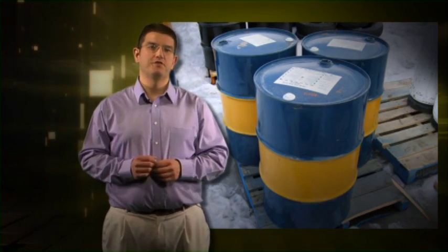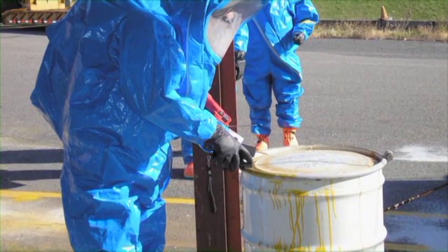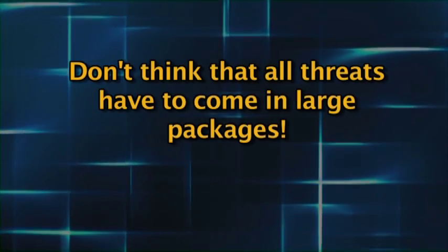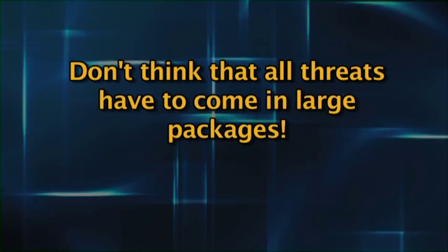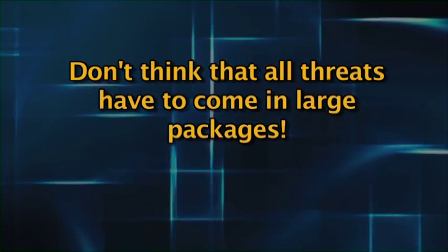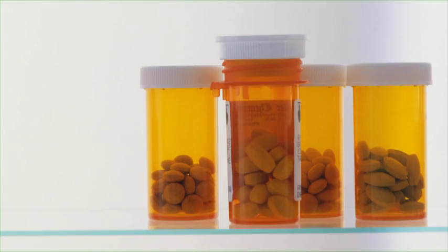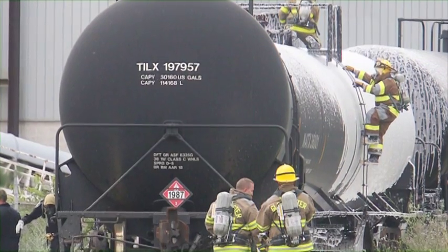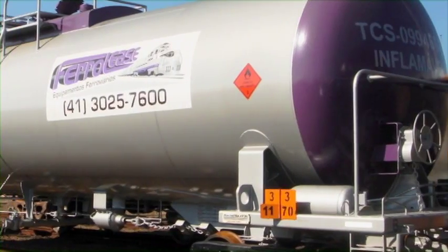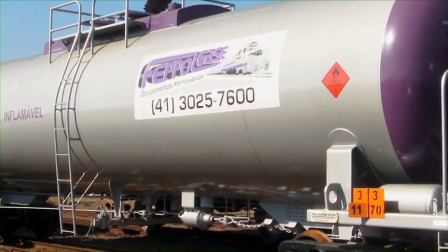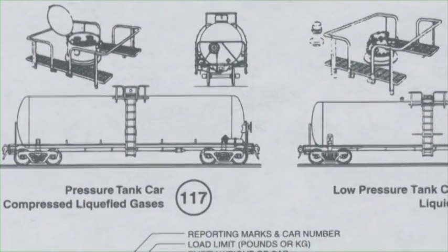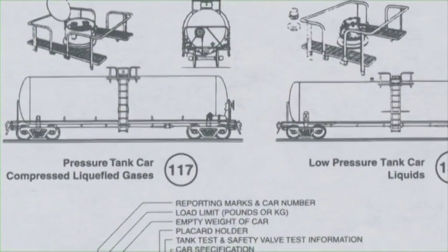Let's look at a couple of visuals. When talking about larger containers, you might find barrels — some plastic and some metal. You will also come across smaller ones. Don't be fooled into thinking that every threat must come in a large package; some will be as small as a prescription bottle. Then we get to mobile containers. Understand that there are a variety of different railroad cars being hauled on the railways, and the shape alone can give you a lot of information about what might be inside.